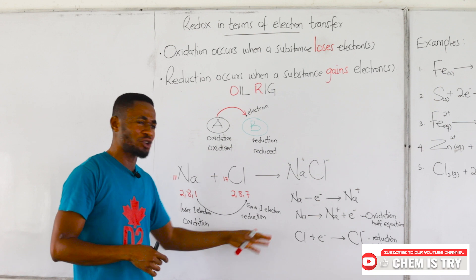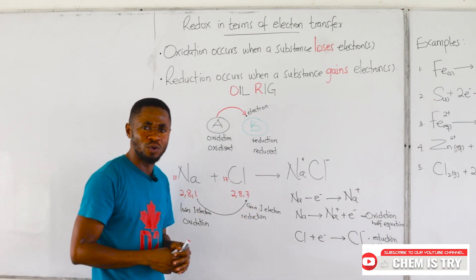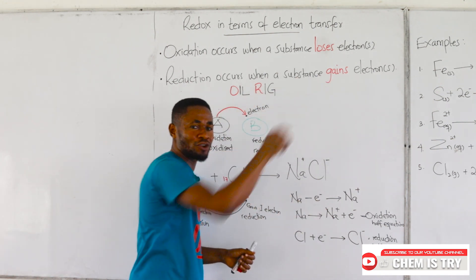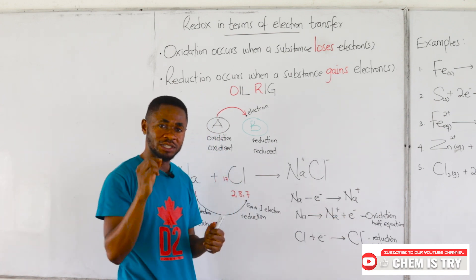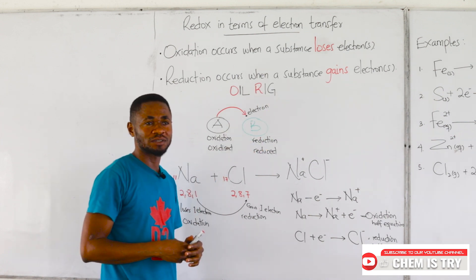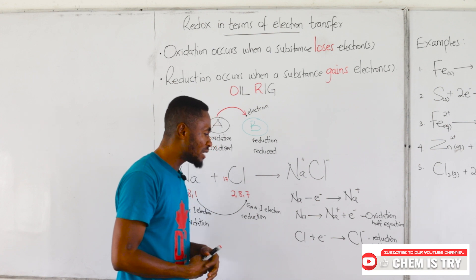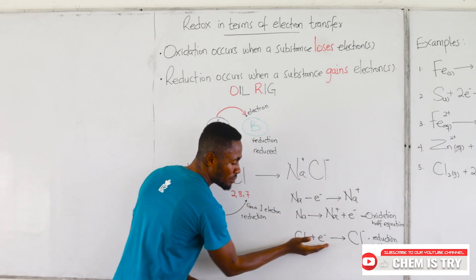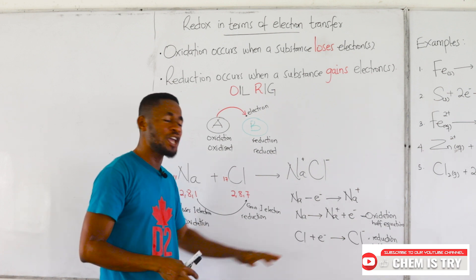Now let's look at the equations critically. In the oxidation half equation, the cation formed and the electron are both found on the product side of the equation. If you look at the reduction half equation, the anion is found on the product side alone, while the main substance that is gaining the electron is found at the reactant side together with the electron.